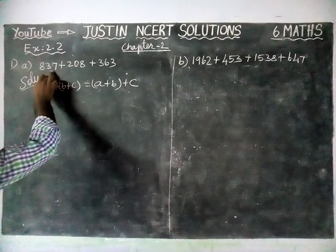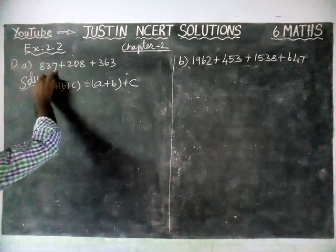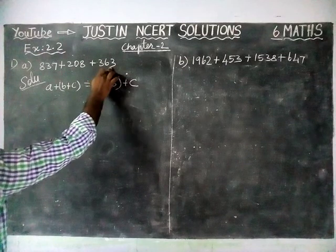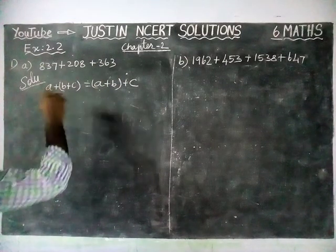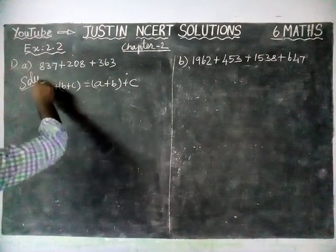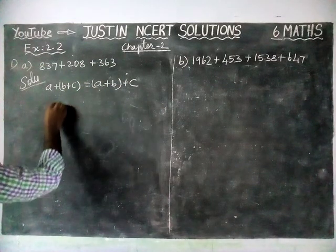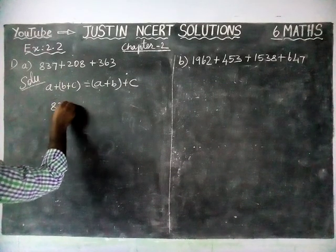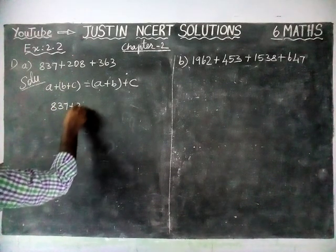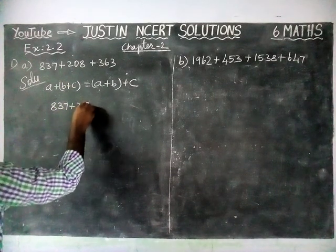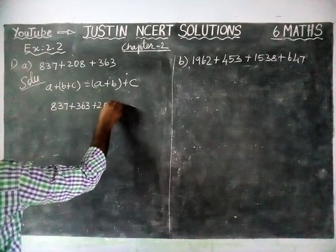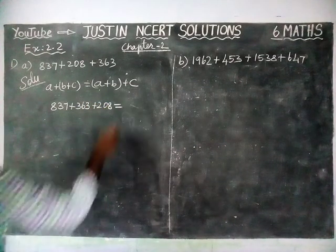Listen here — the last digit of one number is 7 and the last digit of another is 3. So when we are adding 3 plus 7 we will get a round off number. So we are going to interchange: 837 plus 363 plus 208.